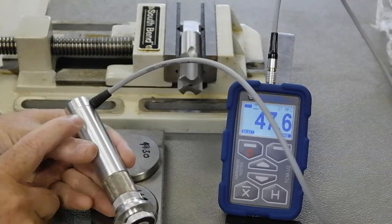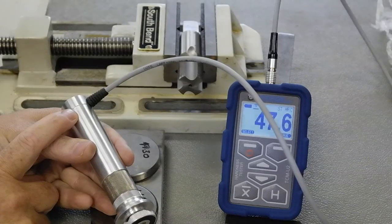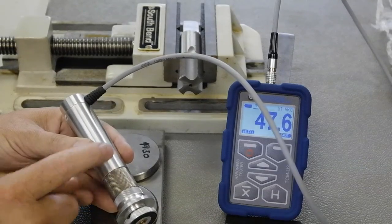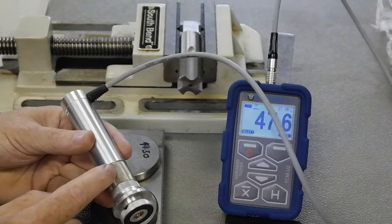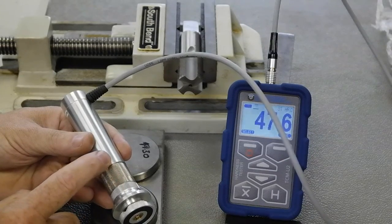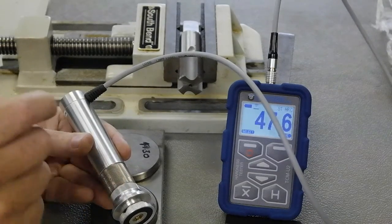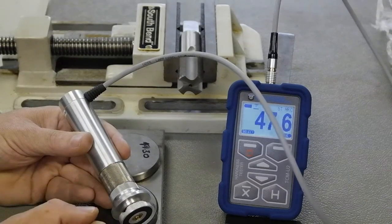With the probe it has its own memory inside where the calibrations are stored. So the probes are interchangeable with different testers. This is a 50N probe which means it requires 12.5 pounds of force pressing down to give an accurate reading.